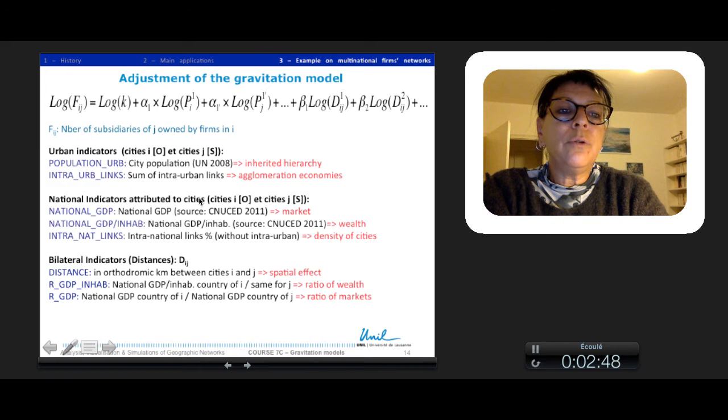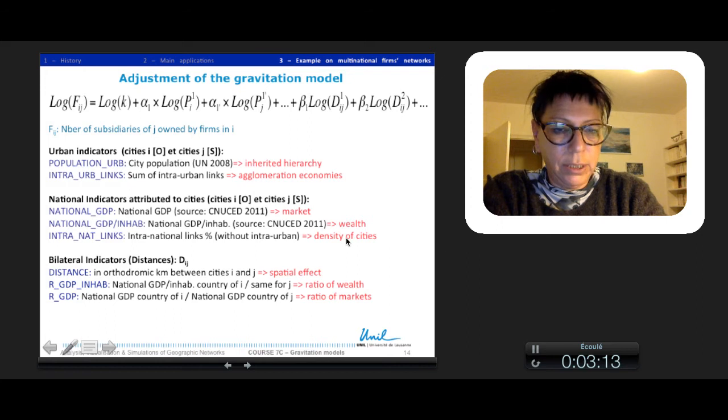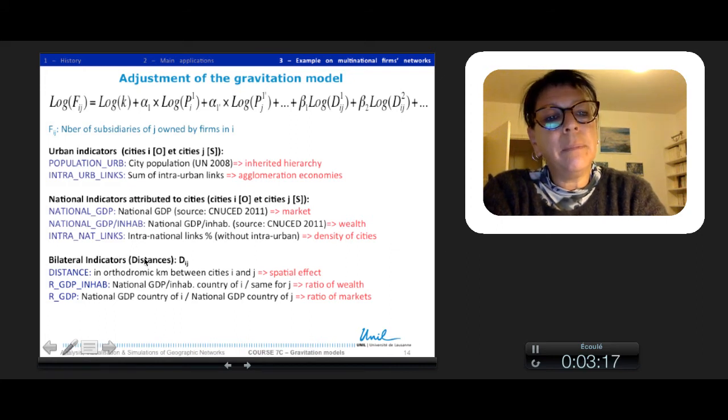I used also national indicators attributed to cities, like the national GDP reflecting the market, the national GDP per inhabitant reflecting the wealth of the country, and the intra-national linkages reflecting the national density of cities around each city.